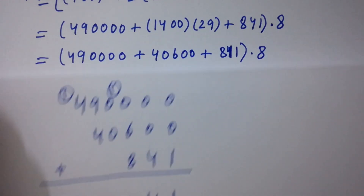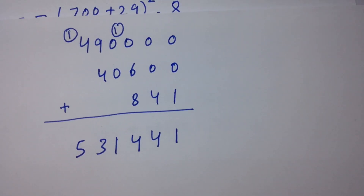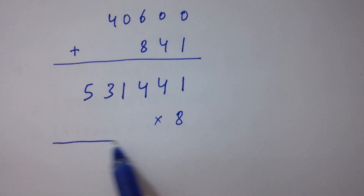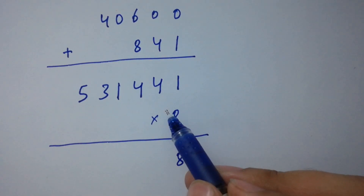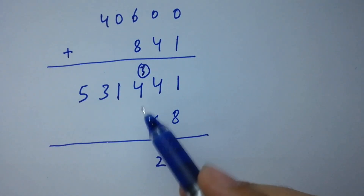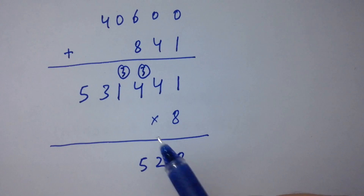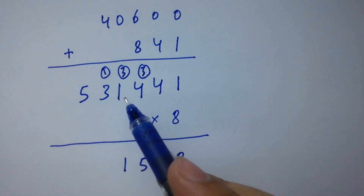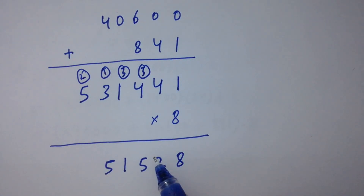Now we multiply 531,441 by 8. Going digit by digit: 8 times 1 is 8, 8 times 4 is 32, write 2 carry 3, 8 times 4 is 32 plus 3 is 35, write 5 carry 3, 8 times 1 is 8 plus 3 is 11, write 1 carry 1, 8 times 3 is 24 plus 1 is 25, write 5 carry 2, 8 times 5 is 40 plus 2 is 42.